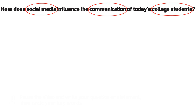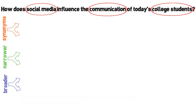Next, let's come up with some related keywords and phrases. In this video, we will focus on synonyms, narrower words, and broader words. This will help you quickly identify the most effective search terms for your topic.